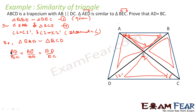Now how to prove that ED is equal to EC? Since there are two pairs of similar triangles, let's work with the first pair. In triangle AED and triangle BEC, since they are similar, we get AE/BE = ED/EC. Let's call this equation 3.